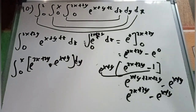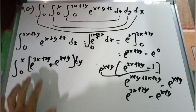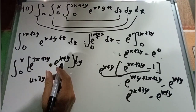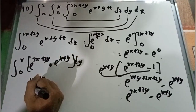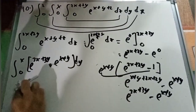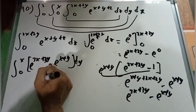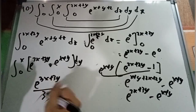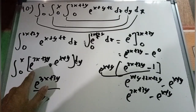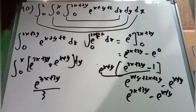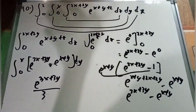Integrating with respect to y, we use substitution. For e to the 3x plus 3y, let u equal 3y, so du equals 3 dy, meaning dy equals du over 3. This gives e to the 3x plus 3y all over 3. For e to the x plus y, the derivative of y is 1, so it integrates to negative e to the x plus y. The limits are 0 to x.